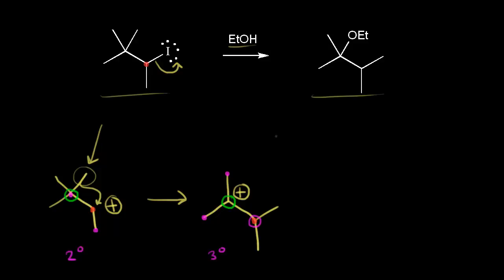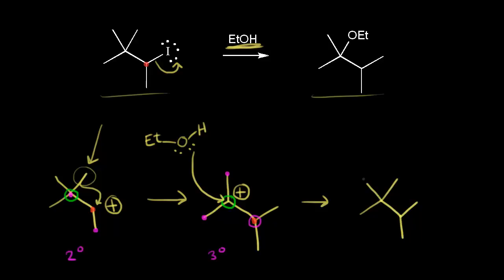This carbocation is our electrophile, and now it's time for our nucleophile to attack our electrophile. Our nucleophile is our solvent, ethanol — so this is a solvolysis reaction. If I draw in an ethanol molecule and put in two lone pairs of electrons on the oxygen, one of those lone pairs is going to form a bond with the carbon circled in green. The nucleophile attacks the electrophile, and we form a bond between the oxygen and the carbon. This oxygen is still bonded to a hydrogen and still bonded to the ethyl. The lone pair of electrons in magenta on the oxygen form this bond, and we still have a lone pair of electrons left on the oxygen.